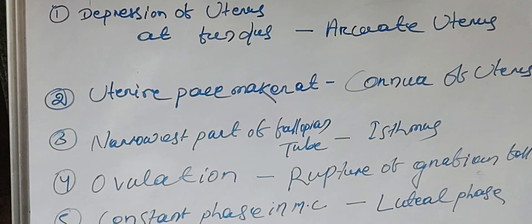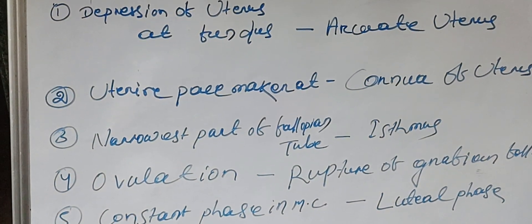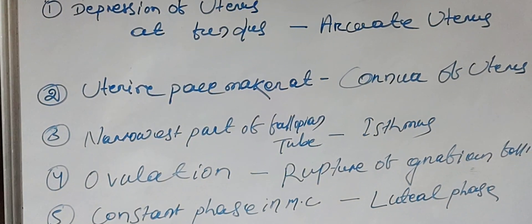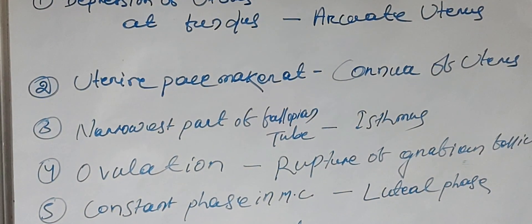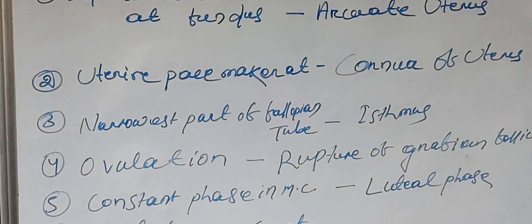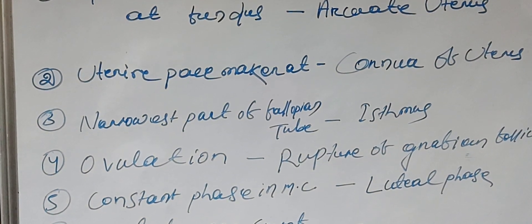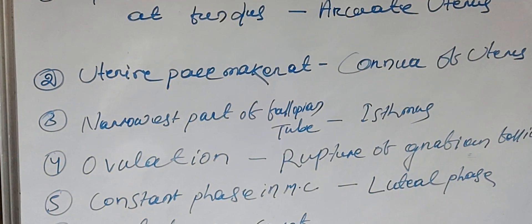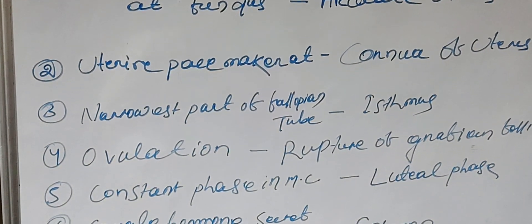Ovulation means rupture of the Graafian follicle. The constant phase in the menstrual cycle is the luteal phase.